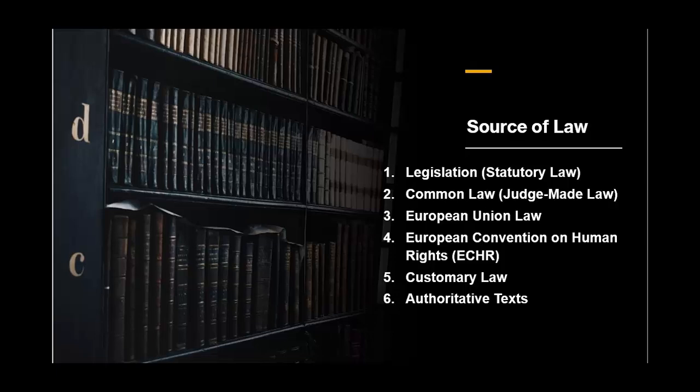Number four: European Convention on Human Rights. This is an international treaty designed to protect human rights and fundamental freedoms in Europe. It's incorporated into UK law by the Human Rights Act 1998, allowing people to bring human rights claims in UK courts. For instance, in the case of R v A No.2 in 2001, the House of Lords had to balance the right to a fair trial with laws restricting the admissibility of certain evidence, and decided the legislation should be interpreted in a way that upheld the right to a fair trial.